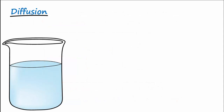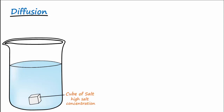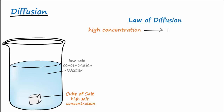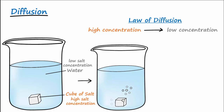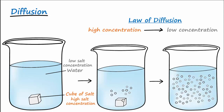Take an example of a cube of salt being placed in a beaker of water. The cube represents where the salt is in high concentration, and the water surrounding the cube represents where the concentration of the salt is low. The salt will follow the law of diffusion and go from high to low until it has dispersed itself evenly throughout the beaker of water. Remember that particles will always go from high to low.